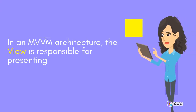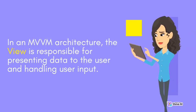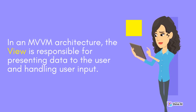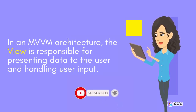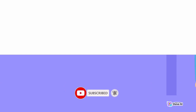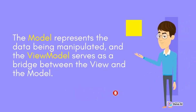In an MVVM architecture, the view is responsible for presenting data to the user and handling user input. The model represents the data being manipulated, and the view model serves as a bridge between the view and the model.